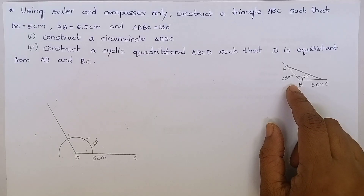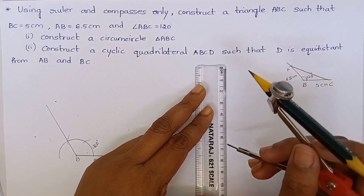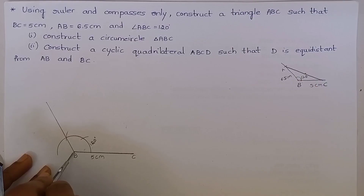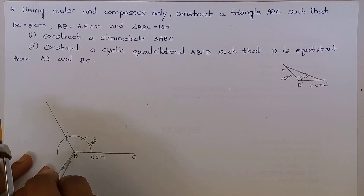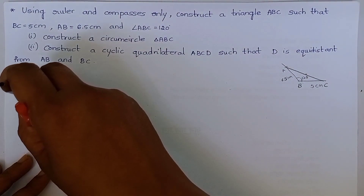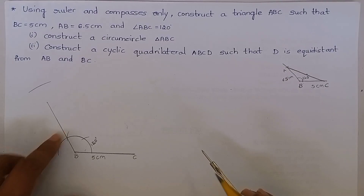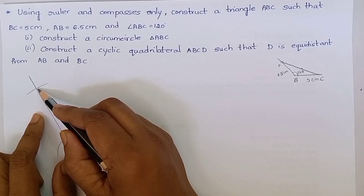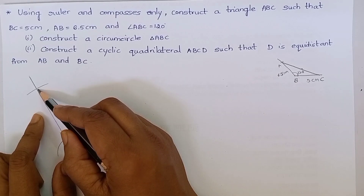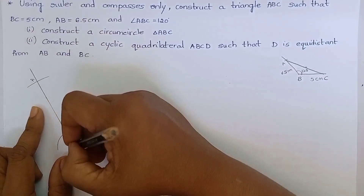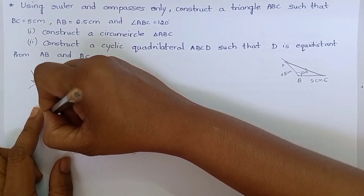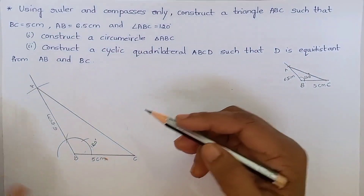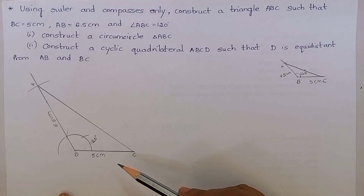AB is 6.5 cm. Measure 6.5 cm — it measures 6.5 cm. Keep the compass at point B and cut an arc. Produce this line. The arc intersects at this point; name this point as A. AB is 6.5 cm. Join AC. Triangle ABC is the required triangle.